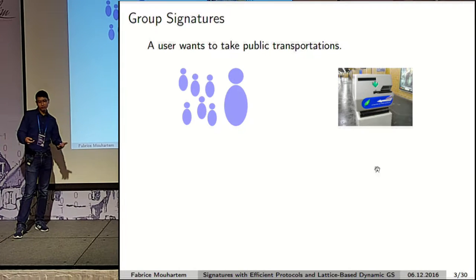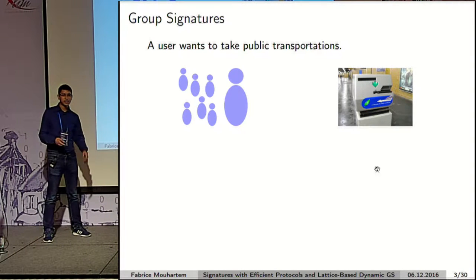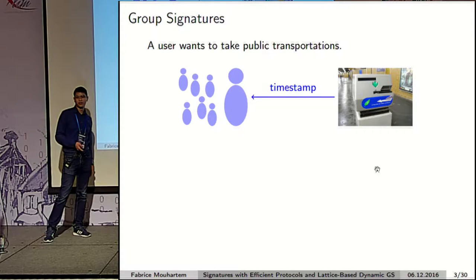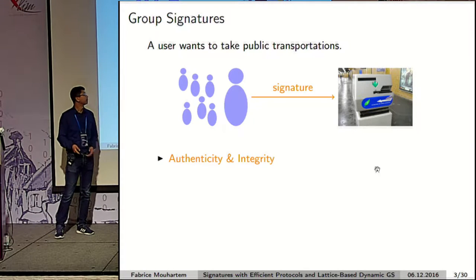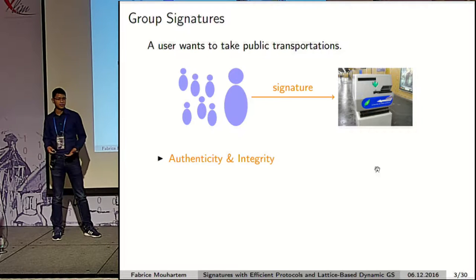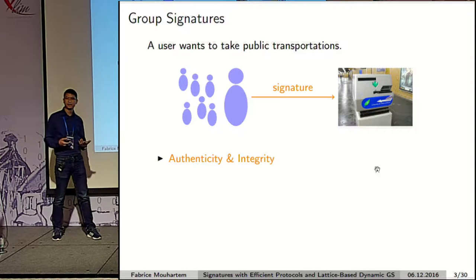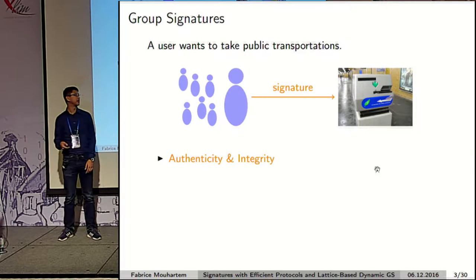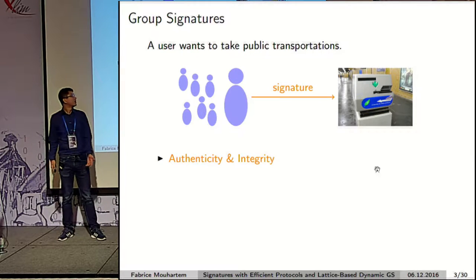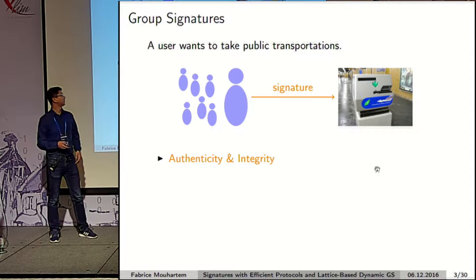We have a user who wants to commute. To do this, he will ask the stamp machine a challenge — for instance, a timestamp — which he will sign. By doing this, he authenticates himself. But in fact, he doesn't want to authenticate himself, but just to prove that he possesses a valid subscription for the public transportation system, meaning he wants to stay anonymous in the set of users who possess a valid subscription.